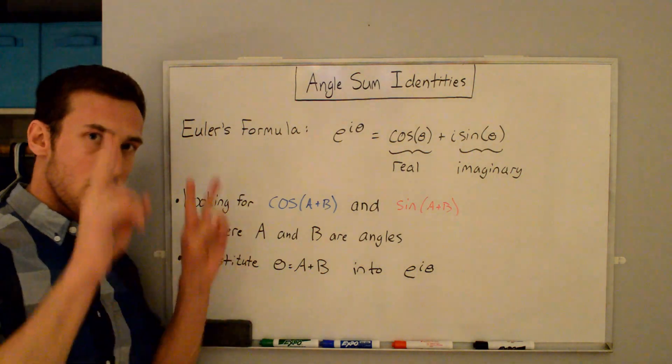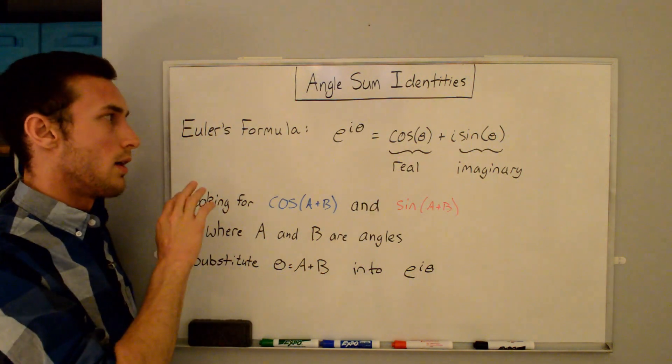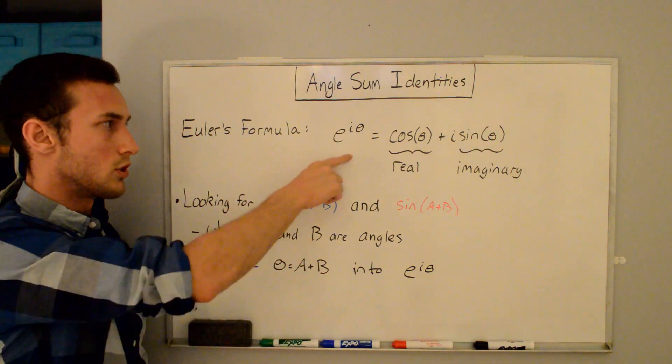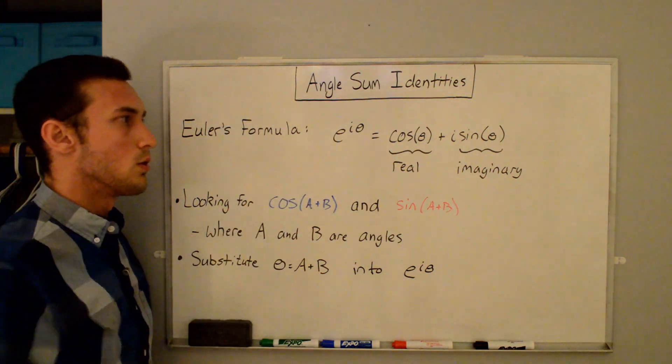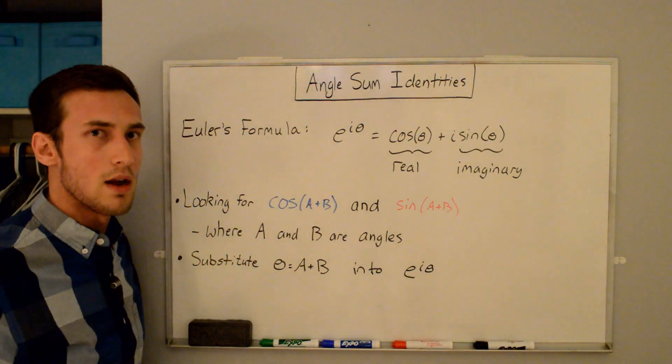I call it a proof because we're going to start with the knowledge of Euler's formula, which is shown here, which is e^(iθ) = cos(θ) + i·sin(θ).